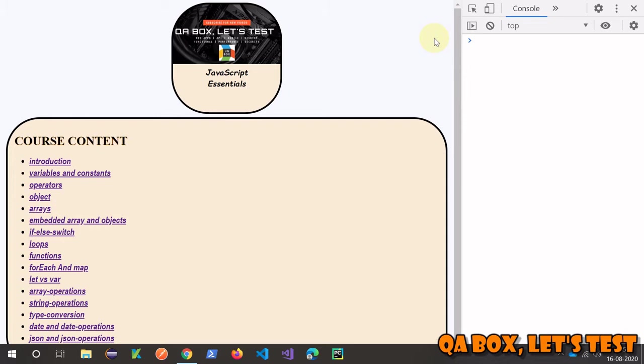We also briefly talked about what are the different primitive data types, and how JavaScript programming language with the help of wrapper classes provides additional methods to the primitive data types. Primitive data types are light and fast. We also talked about constants and saw the syntax to create variables and constants.